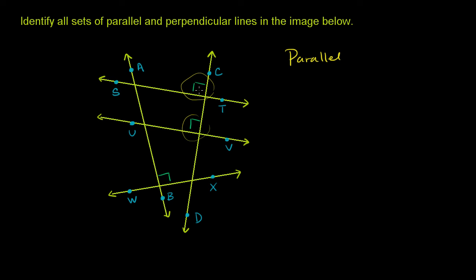And if you have two lines that intersect a third line at the same angle, so these are actually called corresponding angles, and they're the same. If you have two of these corresponding angles the same, then these two lines are parallel.